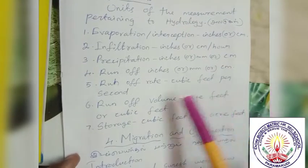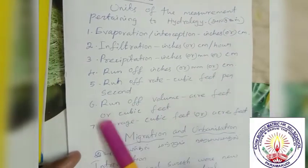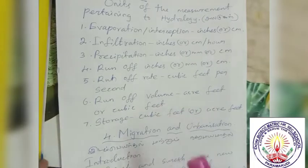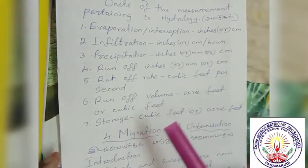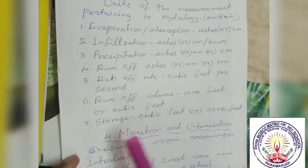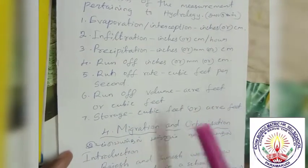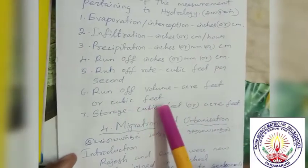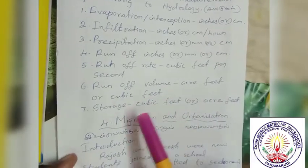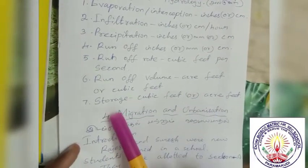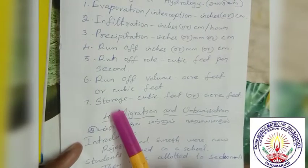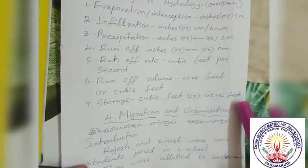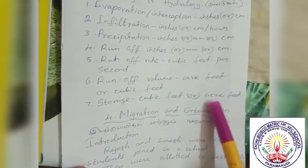Units of measurement pertaining to hydrology: Runoff is measured in cubic feet per second. Runoff volume is measured in acre feet or cubic feet. Storage is measured in cubic feet or acre feet.